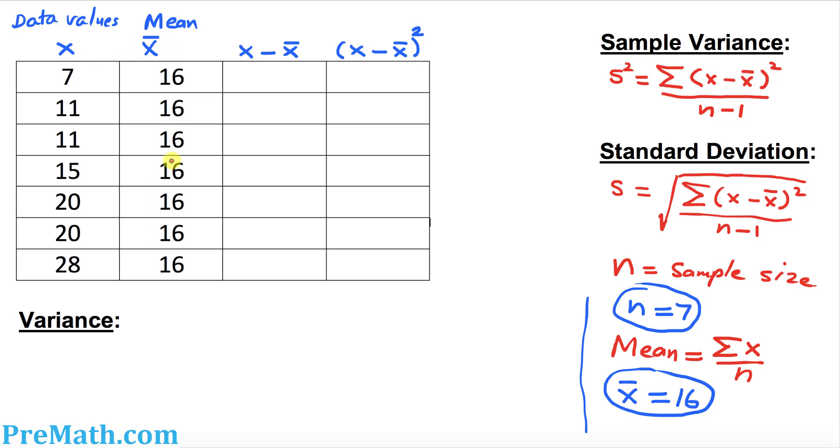The next column, I put down all our mean values, which we call x bar. We figured out these values in the previous step. So the next step, I want you to find x minus x bar, which means the first column minus the second column.